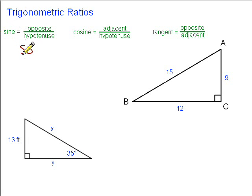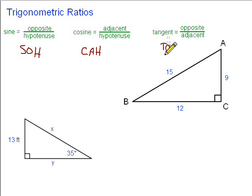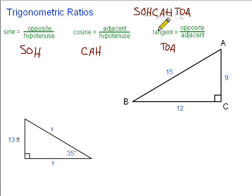S, O, H — so sine, opposite, hypotenuse. And then cosine is the adjacent over the hypotenuse — C, A, H. And then tangent is the opposite over the adjacent — T, O, A. So if we put that all together, we get SOHCAHTOA. That has always helped me to remember the trigonometric ratios and which things go together.